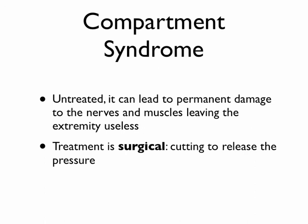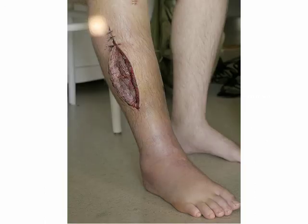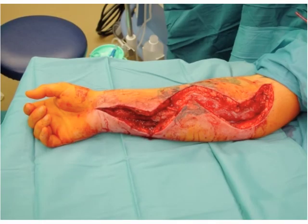If compartment syndrome is untreated, it causes permanent damage to muscles and nerves and could leave the extremity useless. The fix is surgical — a fasciotomy, where you cut and release the compartment so the muscles can expand through the opening and relieve the pressure. Here's a picture of a fasciotomy on a leg to relieve compartment syndrome — this one is healing and has been left open. Here's another picture in the operating room of a compartment syndrome release of the forearm, showing the very large incision that's left open so the muscles have room to expand and the pressure is relieved.